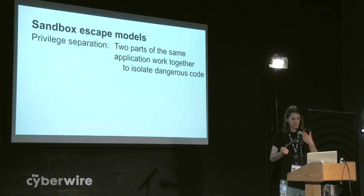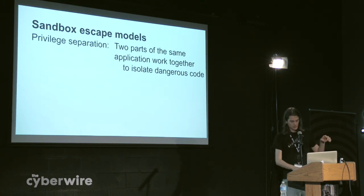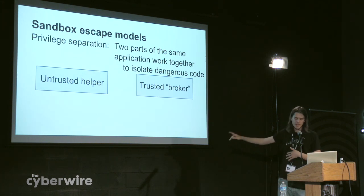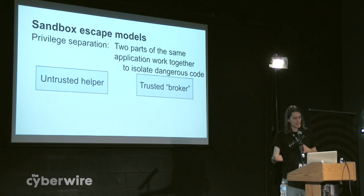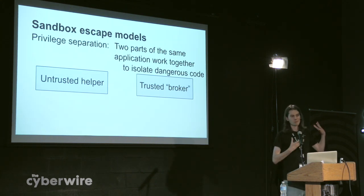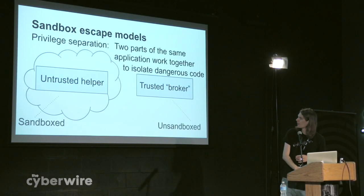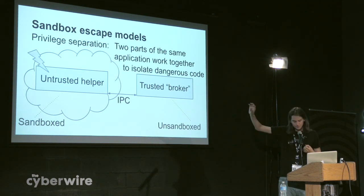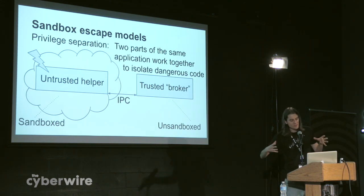The first model is privilege separation where you have one application that has a trusted broker. This term is used in Internet Explorer but applies equally to Safari or Chrome. Your application has got to parse some untrusted data, or it has some large code base the developer doesn't really trust — FFmpeg, for example. You split those two bits of functionality in half: on one side you have some kind of sandbox, and on the other side an unsandboxed trusted broker process. In between these two there's some IPC mechanism, so that if you get code execution in the sandboxed process, you're hopefully restricted in what you can do.